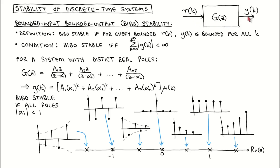The definition for stability states that a system is bounded input-bounded output stable if, for every bounded input r of k, the output of the system is bounded for all time steps.